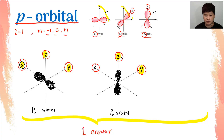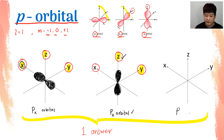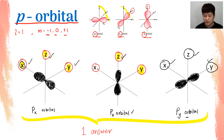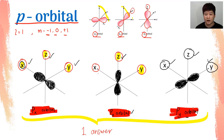Make sure you label what orbital you are drawing. Last but not least, I can have the PY orbital. Before I draw my PY orbital, I want to remind you that my X, Y, and Z must be in the correct arrangement as before. The PY orbital means the dumbbell is on the Y axis, so make sure you draw your dumbbell on the Y axis and shade it off. Because we have three different orbitals, it's very important to label what orbital you are drawing — whether it's PX, PY, or PZ.